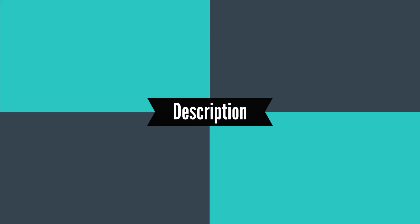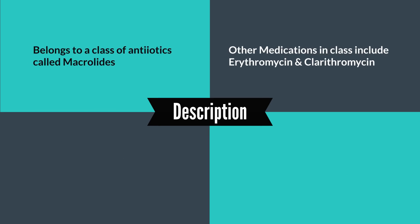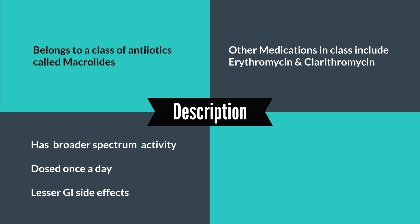So what is azithromycin? It belongs to a class of medications or antibiotics called macrolides. Other common examples in this class include erythromycin and clarithromycin. The advantage that azithromycin has over the other members is that it has a broader spectrum of activity — in other words, it kills more bacteria than some of the other members of the class.